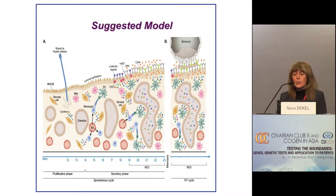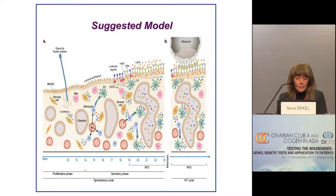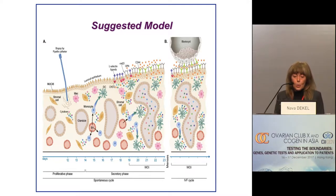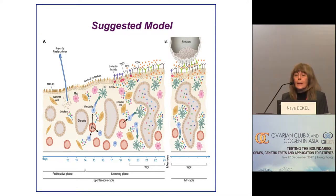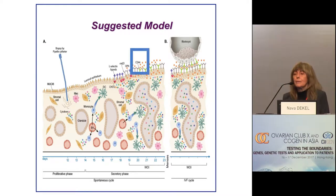I'll show a schematic presentation of this model and emphasize some points that will take me further to our recent studies. We have the endometrial biopsy, the secretion of cytokines, the recruitment of immune cells, the secretion of their own set of molecules, their stimulatory effect on the endometrial epithelium, and the secretion of a set of molecules including integrin, osteopontin, and the receptor for selectin. Among these molecules we also found CD44, which is the receptor for hyaluronic acid, and this attracted our attention.